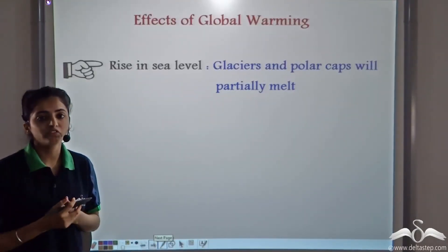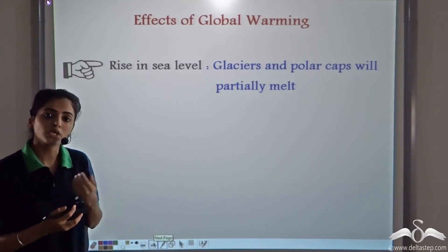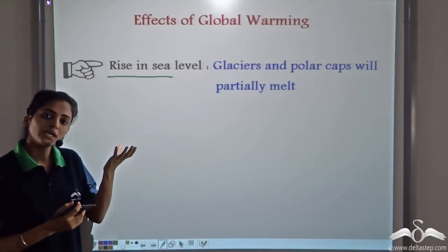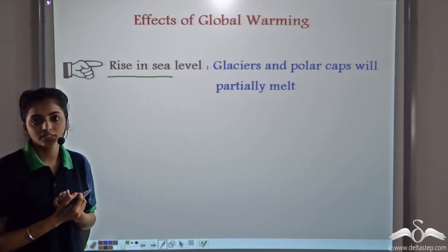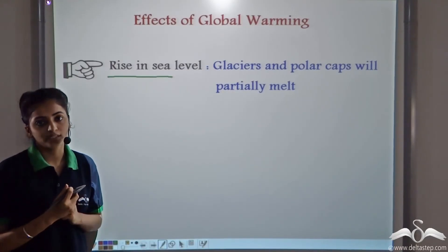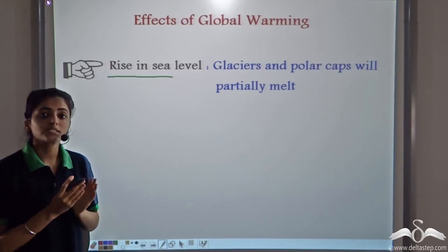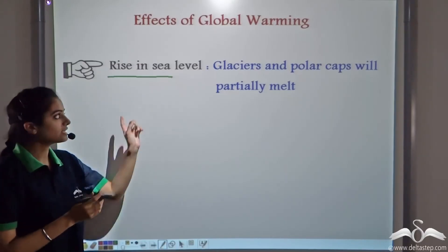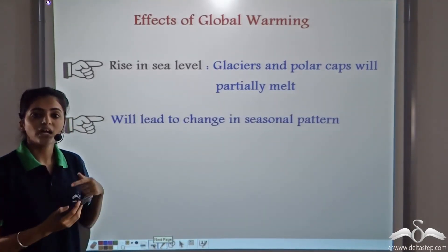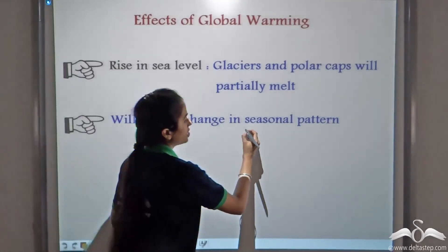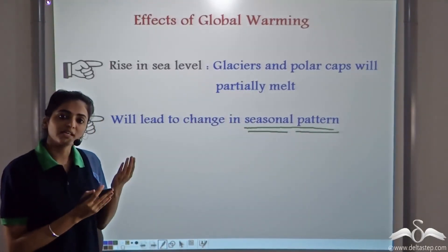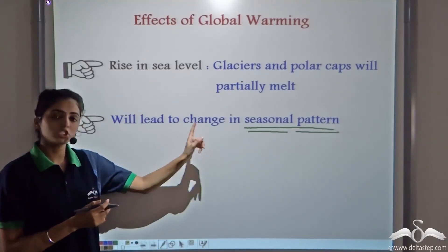What are the different detrimental effects of global warming? If the temperature continues to rise, it will lead to a rise in sea level, because the glaciers and ice caps will melt down. As they melt, the areas surrounding the seas will face a threat of flooding. Additionally, as the temperature increases, it might lead to changes in seasonal patterns.